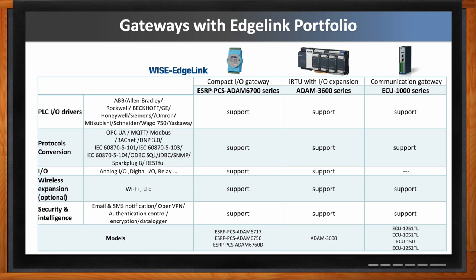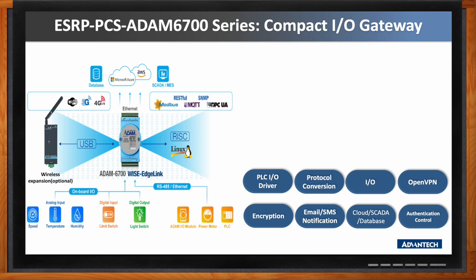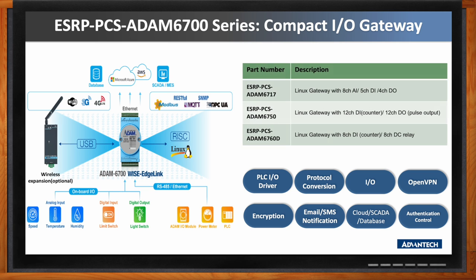What about the ADAN-6700? What kind of benefits does this gateway bring to the table? It's a Linux gateway with a compact size, and it supports EdgeLink. It has two Ethernet ports and two RS-485 ports. The key differentiator is that it has on-board analog and digital I/O, which can acquire sensor signals. It's also able to communicate wirelessly with the wireless expansion accessories.